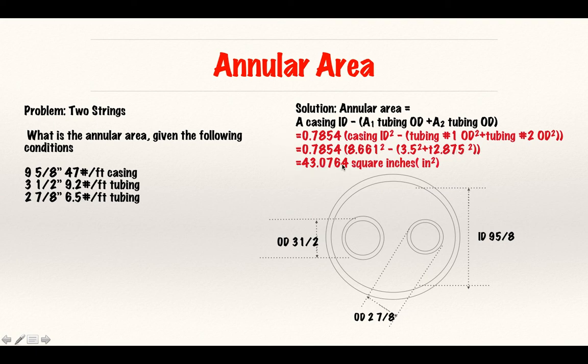I have 0.7854 times 8.661 squared minus 3.52 plus 2.875 squared, and I get my answer which is 43.0764. One thing you have to consider about the weights in respect to the size of your tubing or casing...